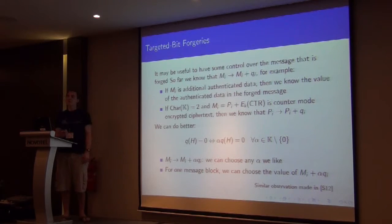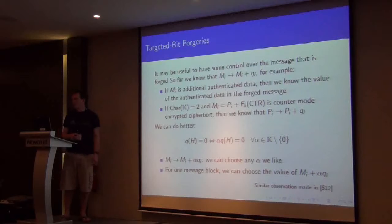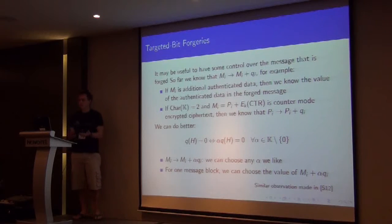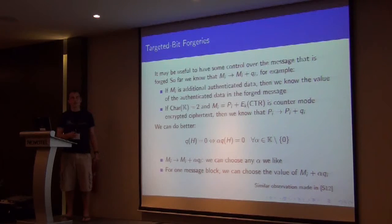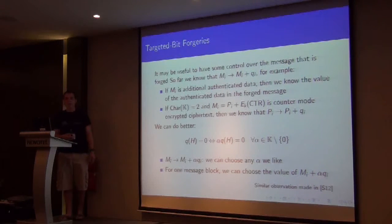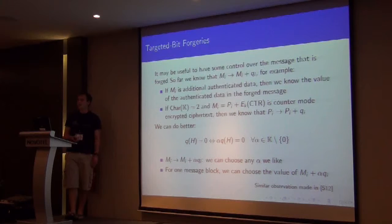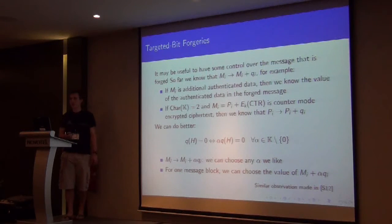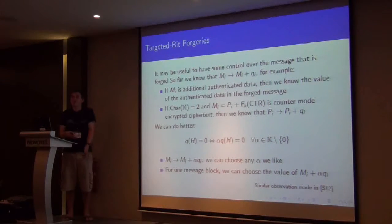Maybe we'd like a bit more control over the message that we're going to forge. Maybe we can predict what's going on. We know that in the forged message, each block is just going to be the original block plus the coefficient of the forgery polynomial. So if in the original message it's authenticated data, and we know what that is in the clear, so we know what it's going to be in the forged message. And if it's counter-mode encrypted ciphertext, and the characteristic of the field we're evaluating in here is two, all of the additions are just XORs. So adding to the ciphertext is the same as adding to the plaintext.